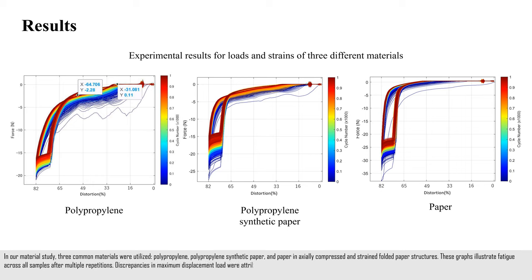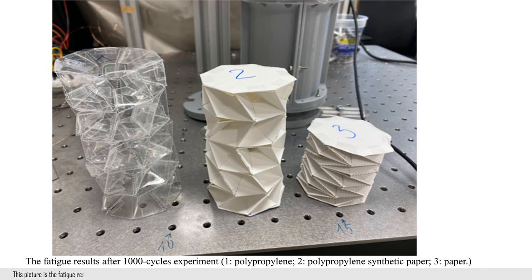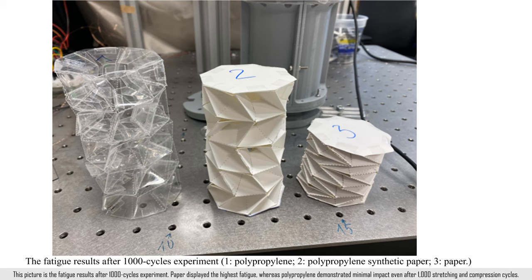These graphs illustrate fatigue across all samples after multiple repetitions. Discrepancies in maximum displacement load were attributed to manual folding errors, notably affecting the load, especially within the rapid load change region during maximum displacement. This picture is the fatigue results after 1,000 cycles experiment. Paper displayed the highest fatigue, whereas polypropylene demonstrated minimal impact even after 1,000 stretching and compression cycles.